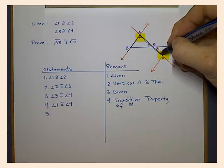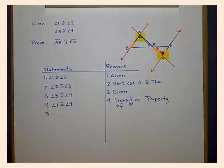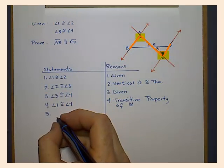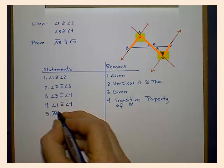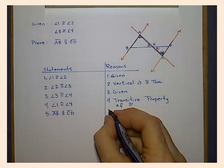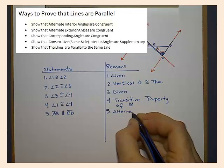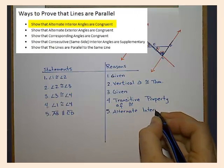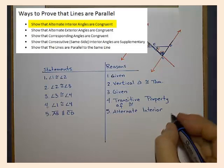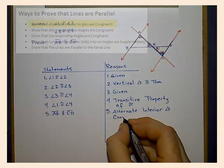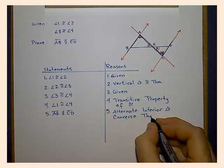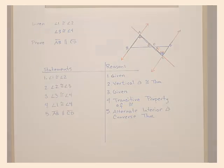Well, since they form this Z shape, I know that they're alternate interior angles. And since I've already shown that these guys are congruent, I know now that I can use the alternate interior angles converse theorem to prove that the lines are parallel. And I'm done. Thank you.